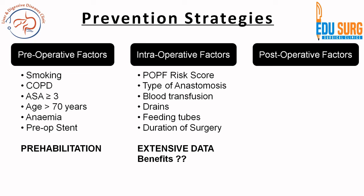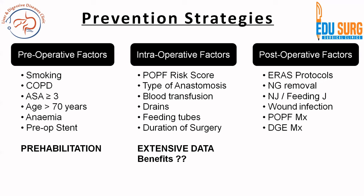For intra-operative factors, the POPF risk score is important, which depends on gland texture, indication of surgery, duct diameter, and blood transfusion. Presence or absence of feeding tubes and the range and duration of surgery are also intra-operative risk factors for POPF and secondary DGE. Post-operatively, enhanced recovery after surgery protocols have been shown to reduce DGE. Naso-jejunal or feeding jejunostomy tubes need proper management, NG tube removal should be based on the post-operative course, wound infection should be treated early, and POPF management all contribute to managing DGE — especially secondary DGE.